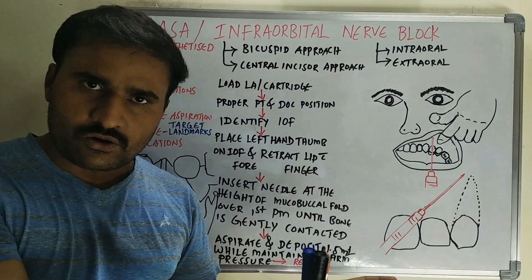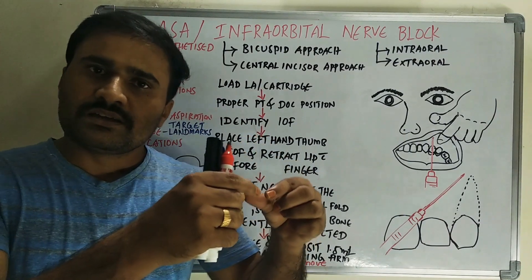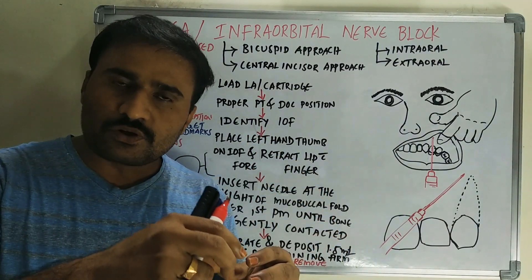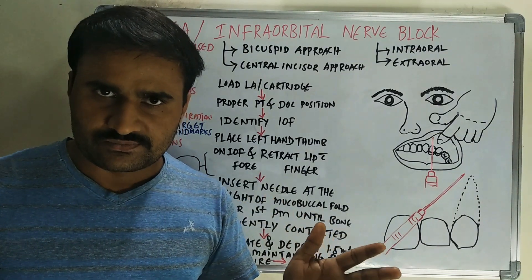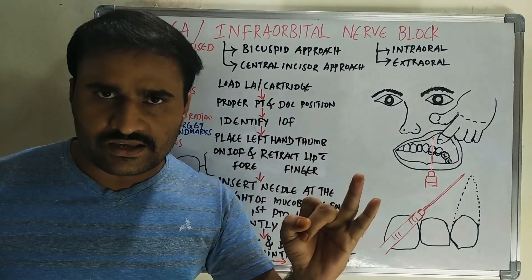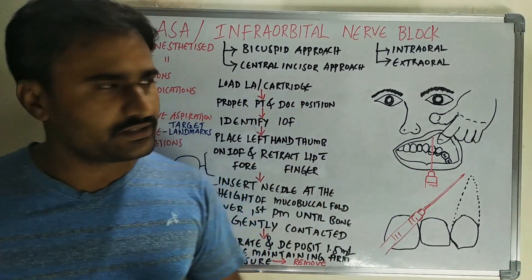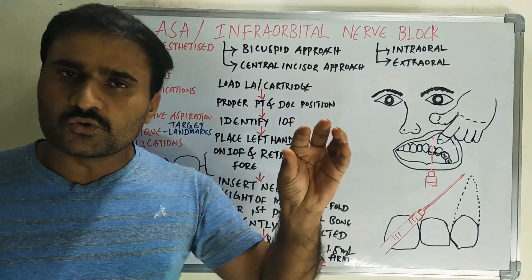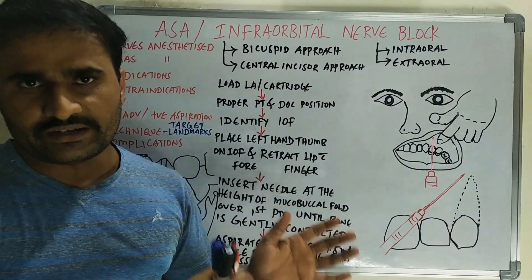The maxillary nerve gives ASA and MSA in the infraorbital canal. After exiting from the infraorbital foramen, it gives three terminal branches: inferior palpebral, lateral nasal, and superior labial. Those are the nerves anaesthetized.